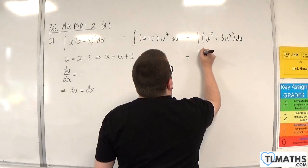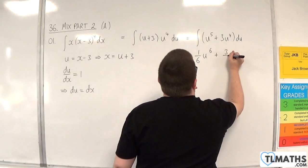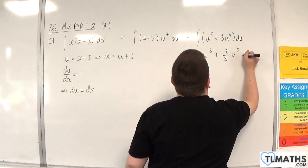Add 1 to the power divided by the new power, so 1/6 u to the 6 plus 3/5 u to the 5 plus c.